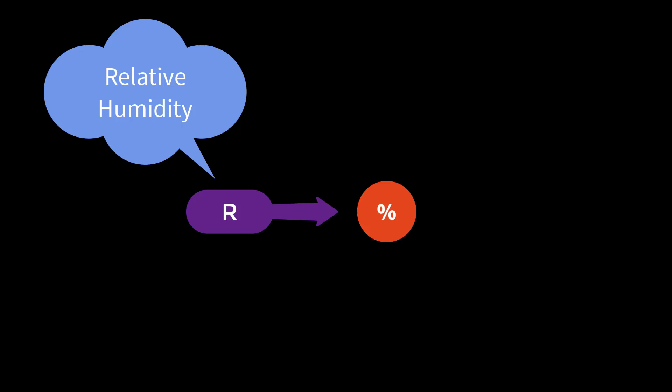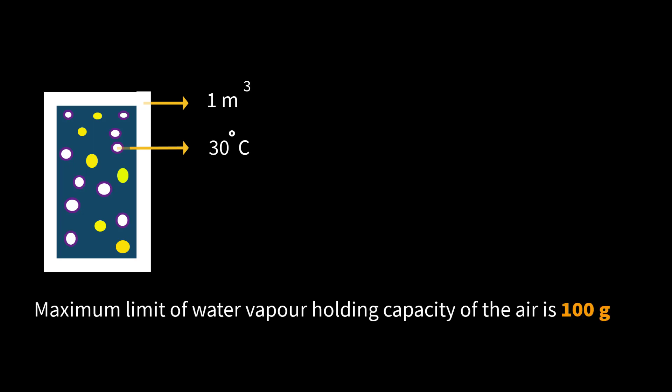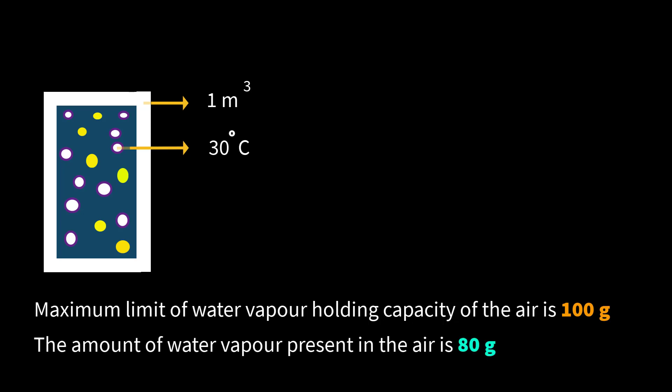Consider a closed container filled with air in which water vapor is also present. Suppose the volume of this container is one cubic meter, air temperature is 30 degrees Celsius, the maximum water vapor holding capacity of the air is 100 grams, and the amount of water vapor present in the air is 80 grams.